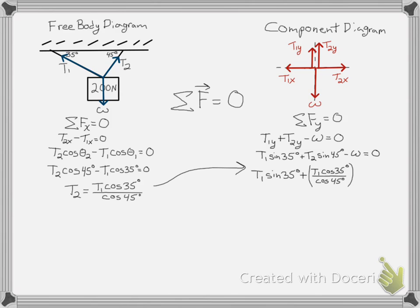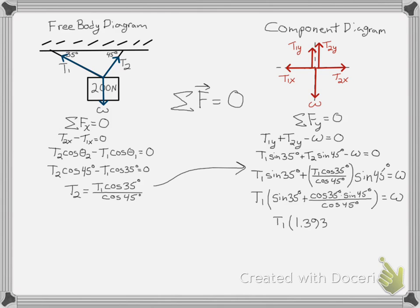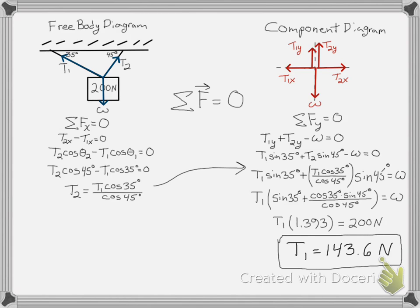Now I can solve for T1 by first distributing — or factoring, really — the T1 out of the expression. I can substitute some numerical values and now I've been able to solve for the first tension.